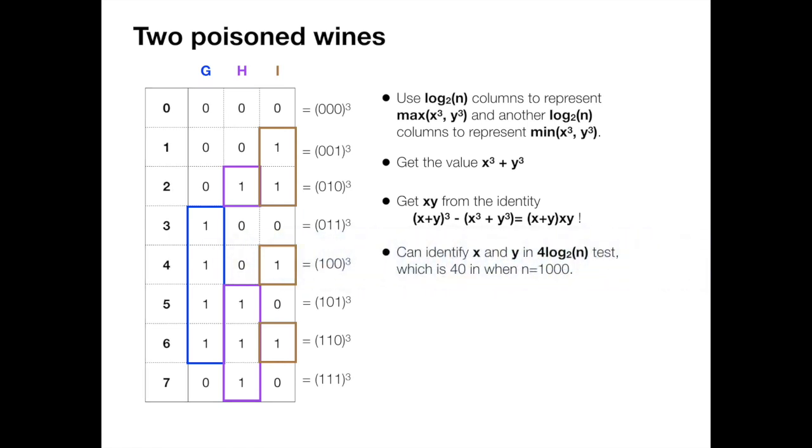So with x plus y and x times y, we can recover x and y by solving a quadratic equation. And this is how we can find x and y in 4 times log₂(n) tests.